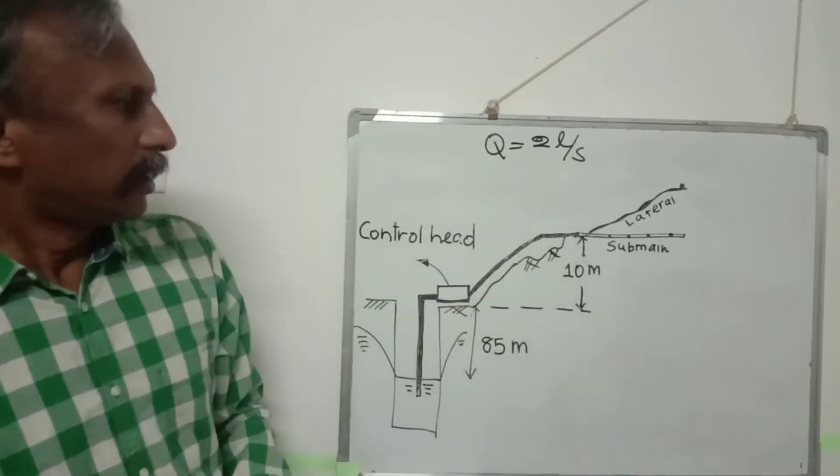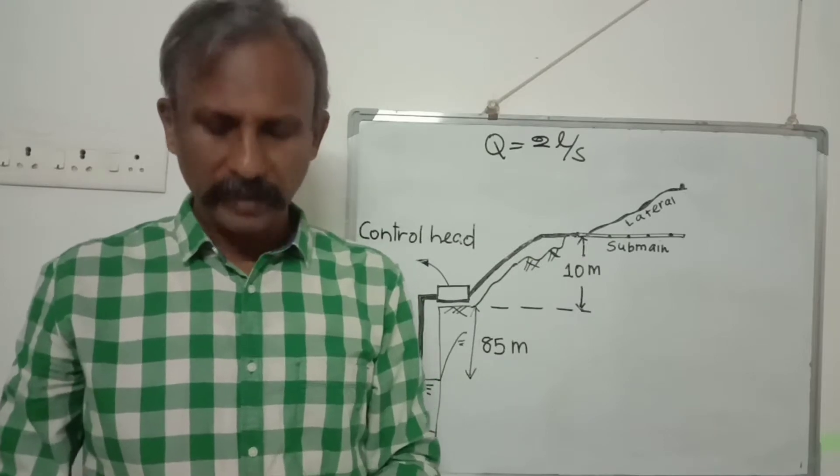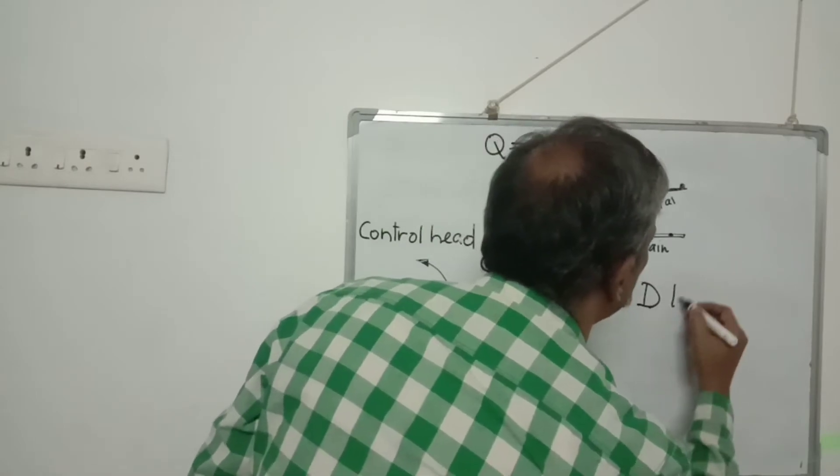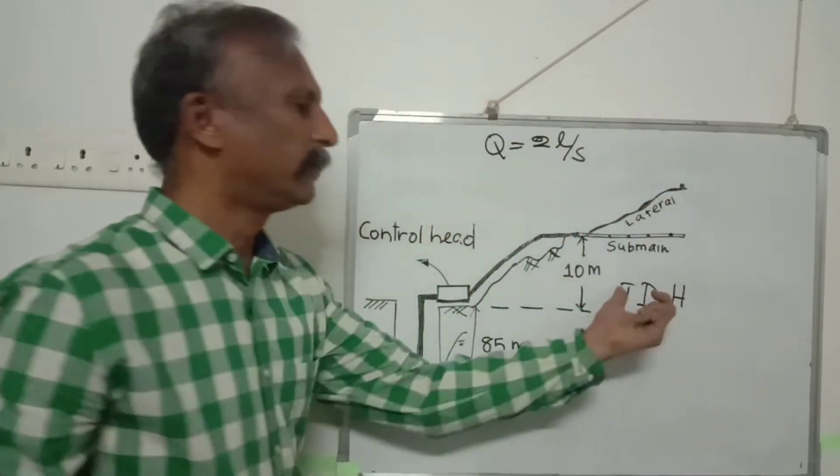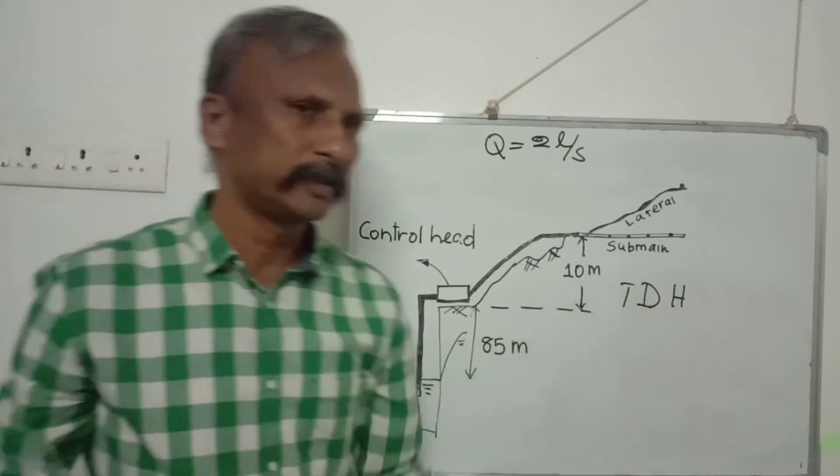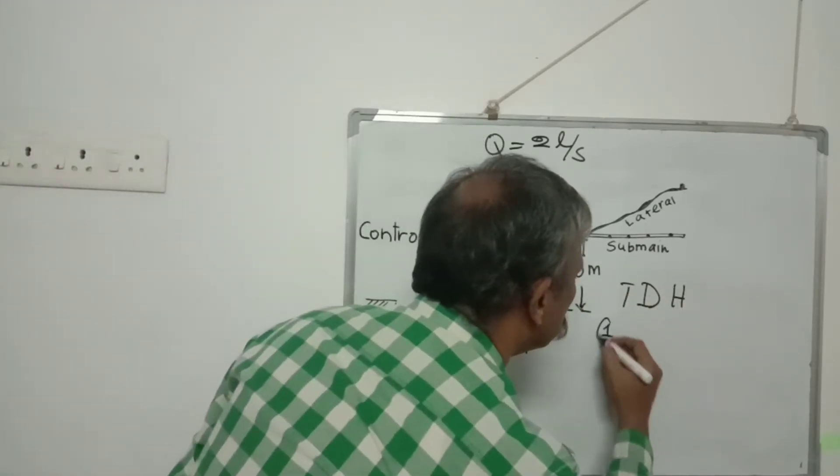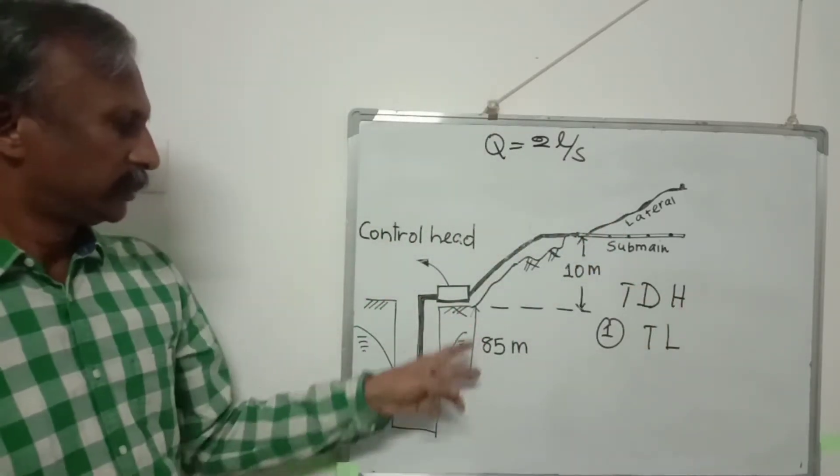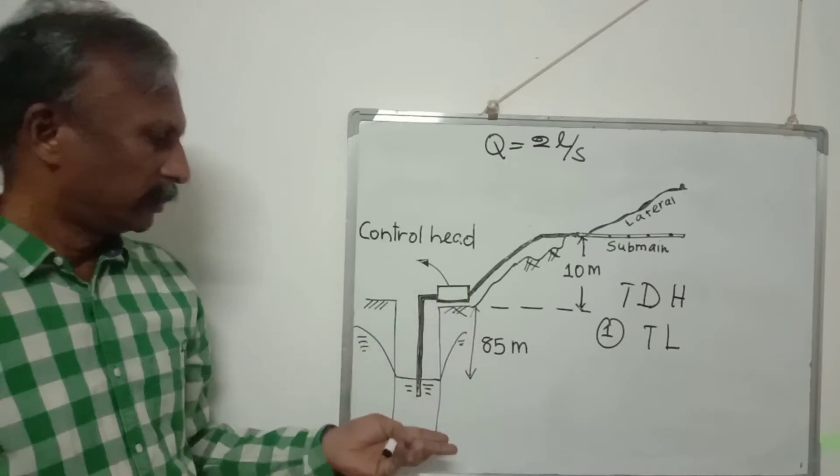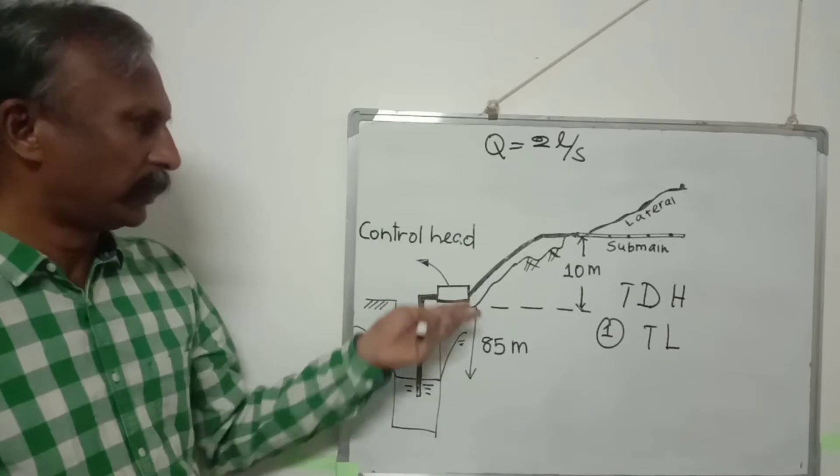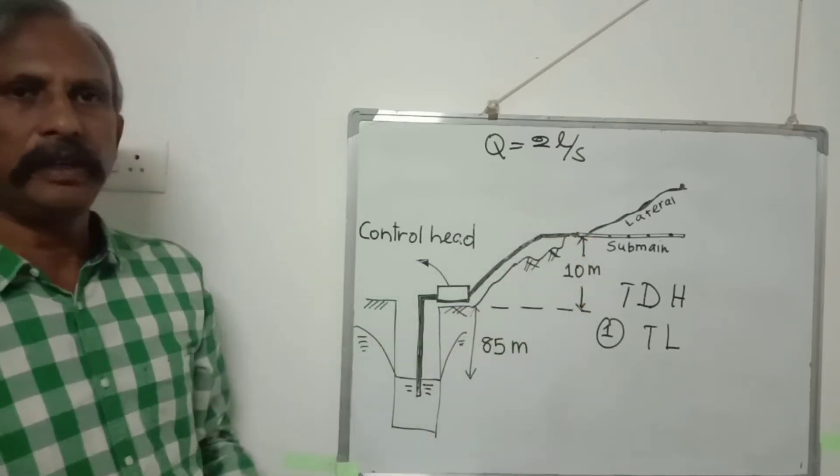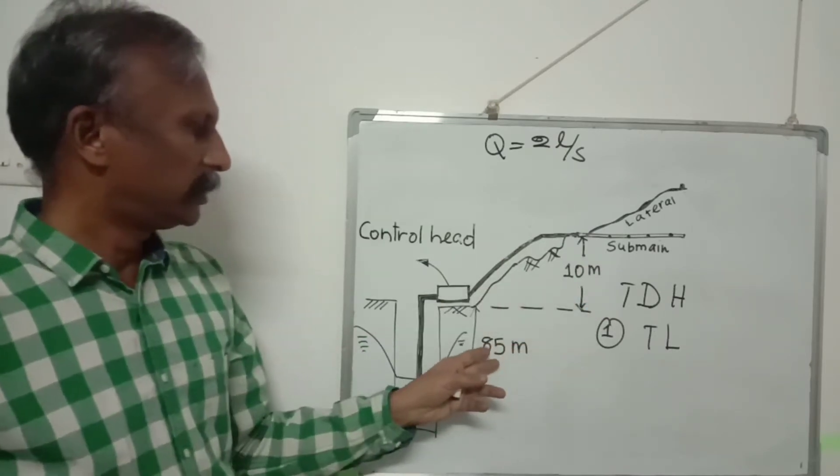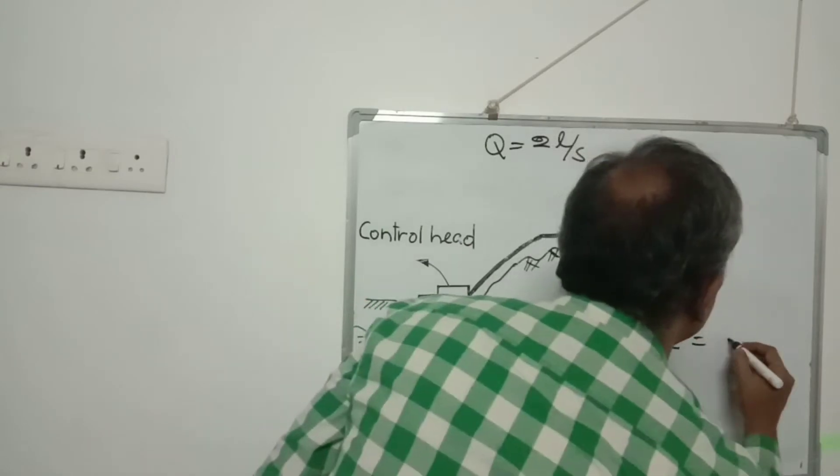After doing these things, we should find out the total dynamic head needed to be developed by the pump. It has a few components. One is total lift. Total lift is this 85 meters - the water has to be lifted from here to the ground - and also the height of the most critical submain from the field level. So this is 85 plus 10 is 95 meters.